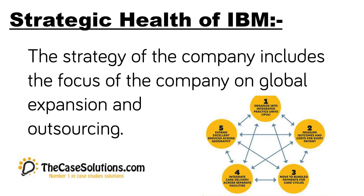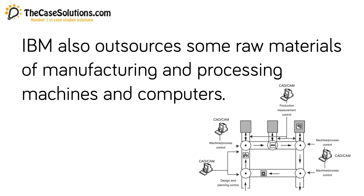The strategic health of IBM includes a focus on global expansion and outsourcing. The healthy strategy of the company also includes business operations with higher profitability. The global expansion strategy is aimed at entering developing markets where there are more chances of growth. IBM also outsources some raw materials for manufacturing and processing machines and computers, with a competitive strategy of lower cost and higher profit margins.